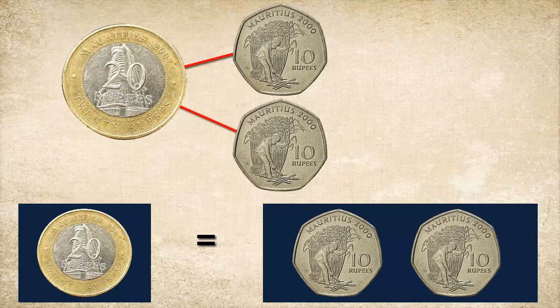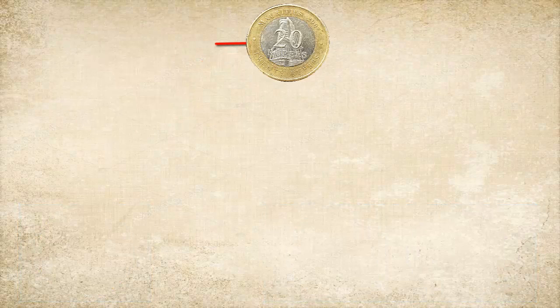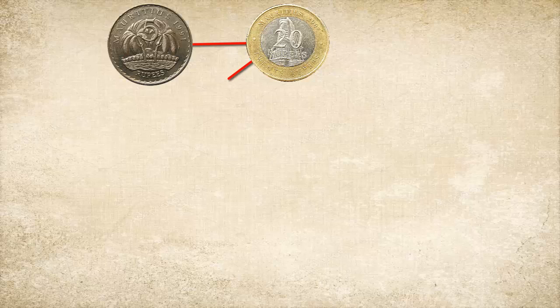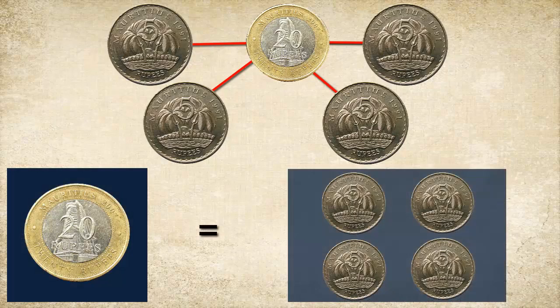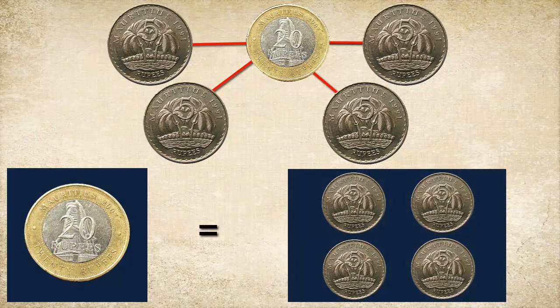One twenty-rupee coin is equal to two ten-rupee coins. One twenty-rupee coin is equal to four five-rupee coins.